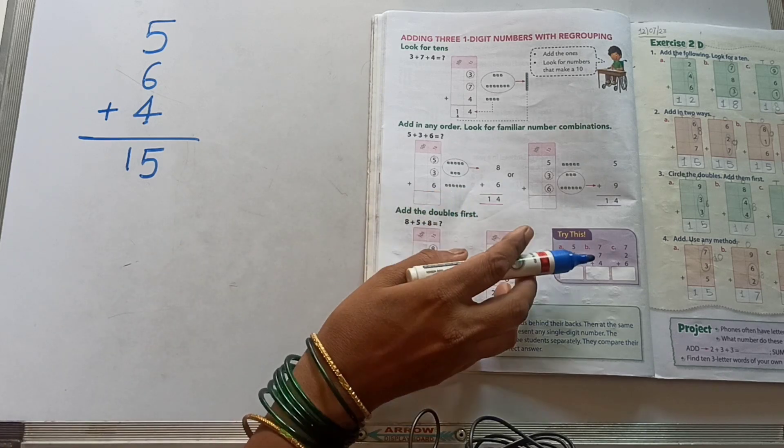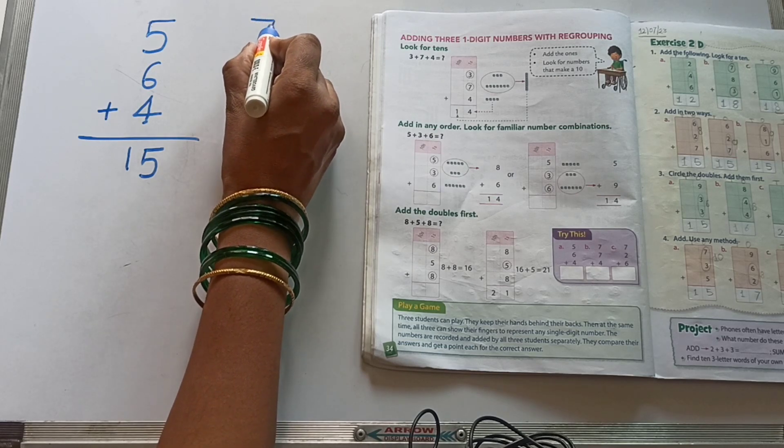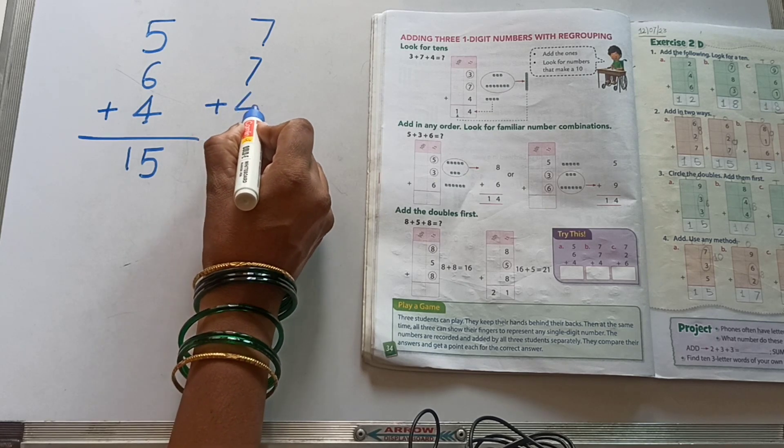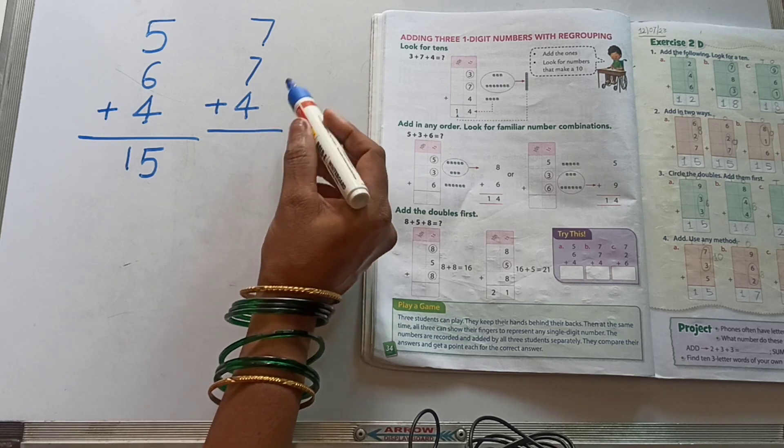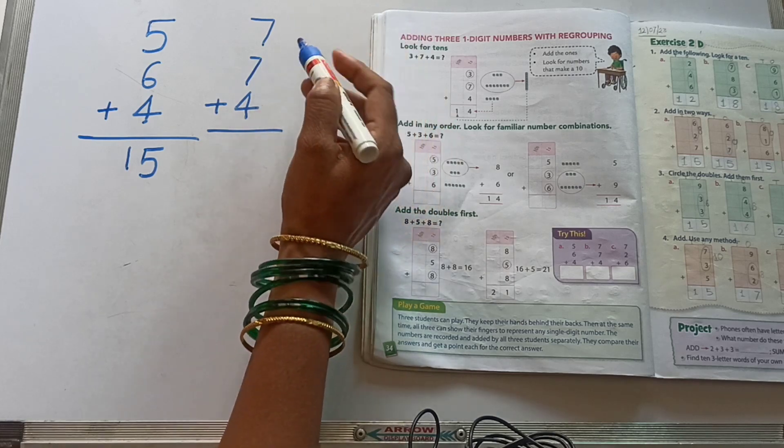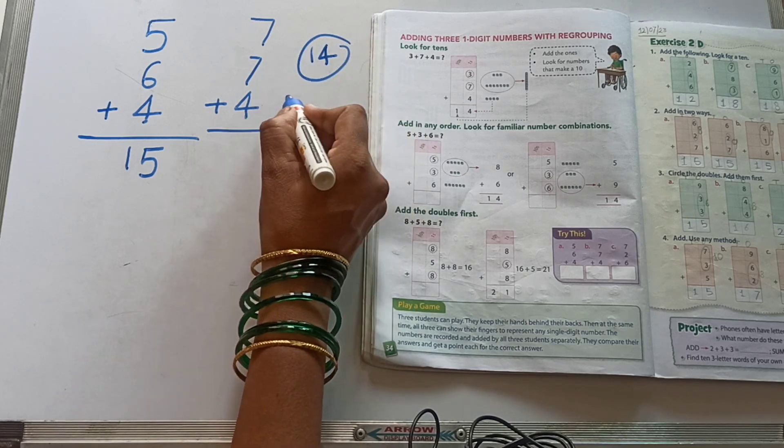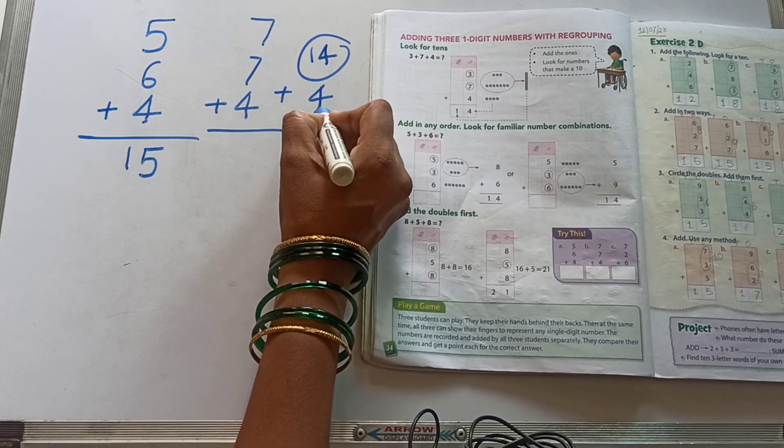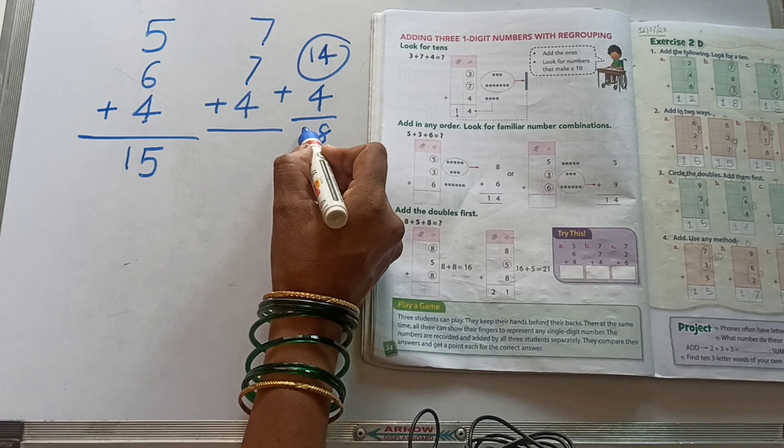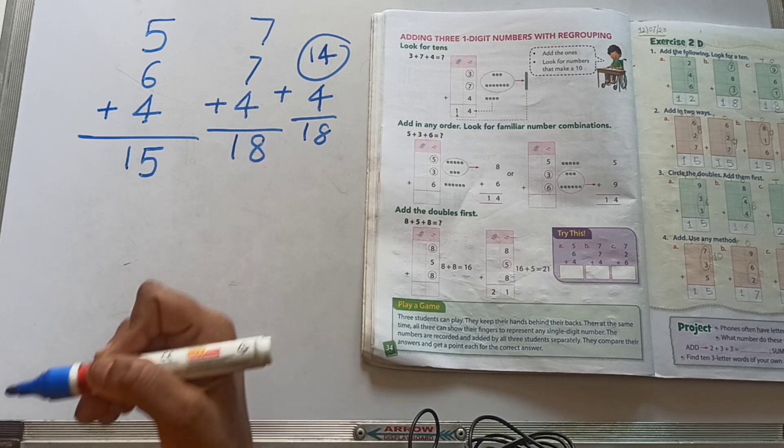Next one, B. 7 plus 7 plus 4. See, first two numbers are 7, 7. 7 twos are 14. Plus 4. And write down this 1 number as the same. 1, 8, 18. Our answer.